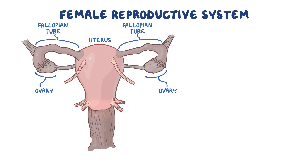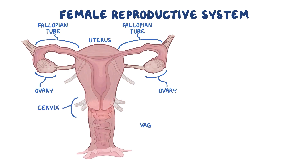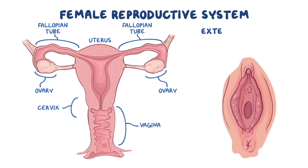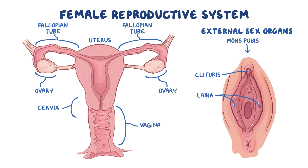The uterus is the strong muscular sac that a fetus can develop in. The neck of the uterus is called the cervix, and it protrudes into the vagina. At the opening of the vagina are the external sex organs, usually just called the genitals, in the vulva region. They include the labia, the clitoris, and the mons pubis.